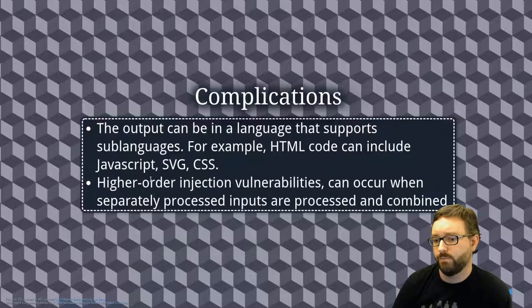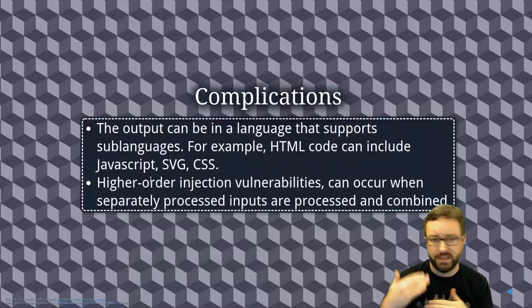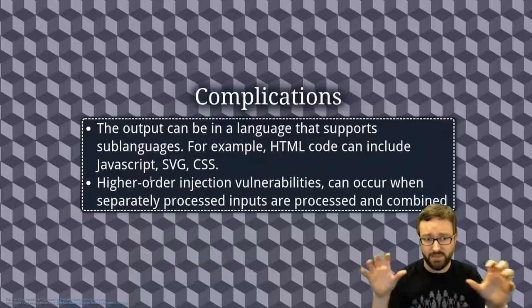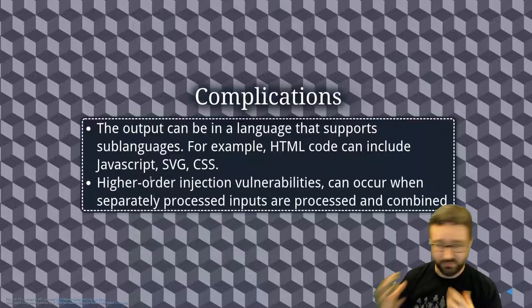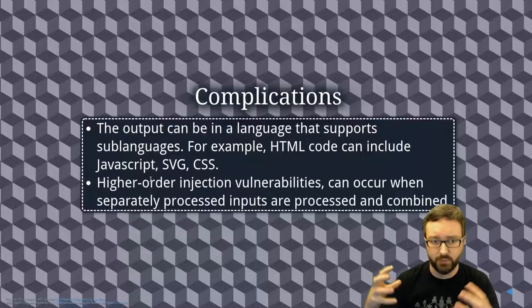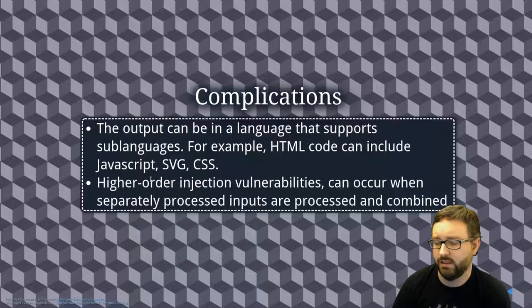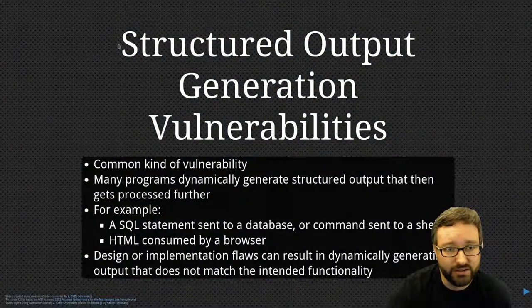Higher-order injection vulnerabilities occur when there are separately processed inputs that each have sanitization and validation happening, but then get combined together in ways that expose a new vulnerability. If you're clever and construct these different inputs to a system, you can end up being able to inject something. It's a complicated picture, but that is structured output generation vulnerabilities.